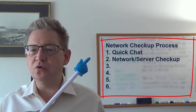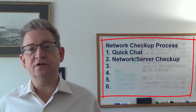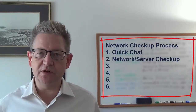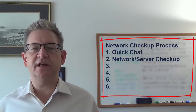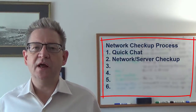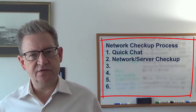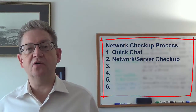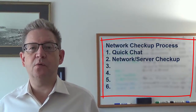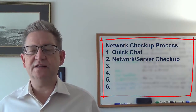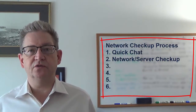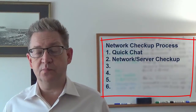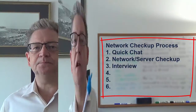Number two, you do the actual server checkup. That means you go through the list — your 68-point checklist or whatever you use. You look at how much free disk space they have, you look at their error logs to see what's going on, you look at how fast their network is, you check whether all of their NICs are in proper order, and so forth.